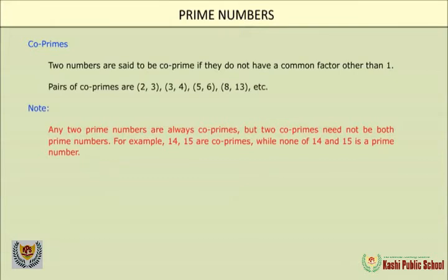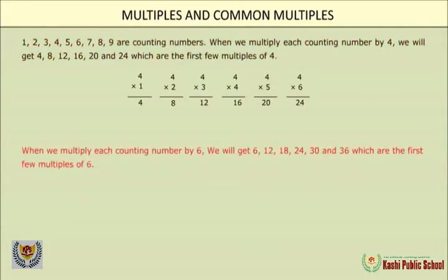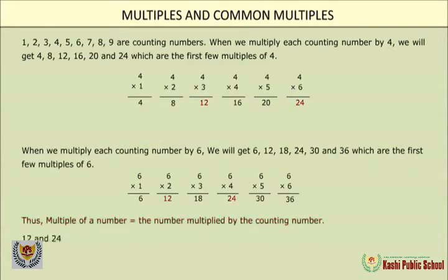Two co-primes need not both be prime numbers — for example, 14 and 15 are co-primes while neither 14 nor 15 is a prime number. Multiples and common multiples: when we multiply each counting number by 4, we get 4, 8, 12, 16, 20, 24, which are the first few multiples of 4. Similarly we can find the first few multiples of 6. A multiple of a number equals the number multiplied by a counting number; 12 and 24 are common multiples of both 4 and 6.